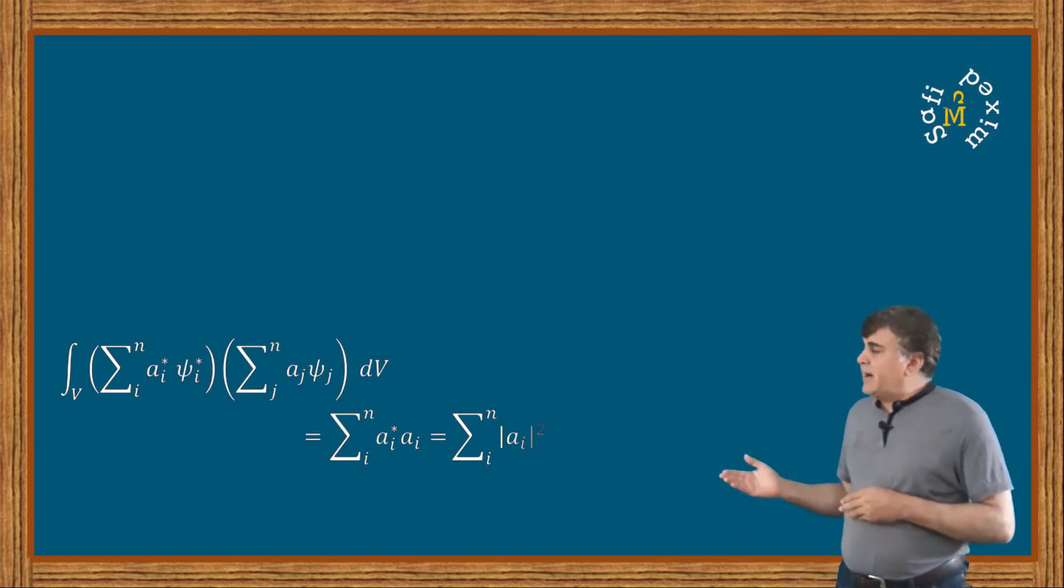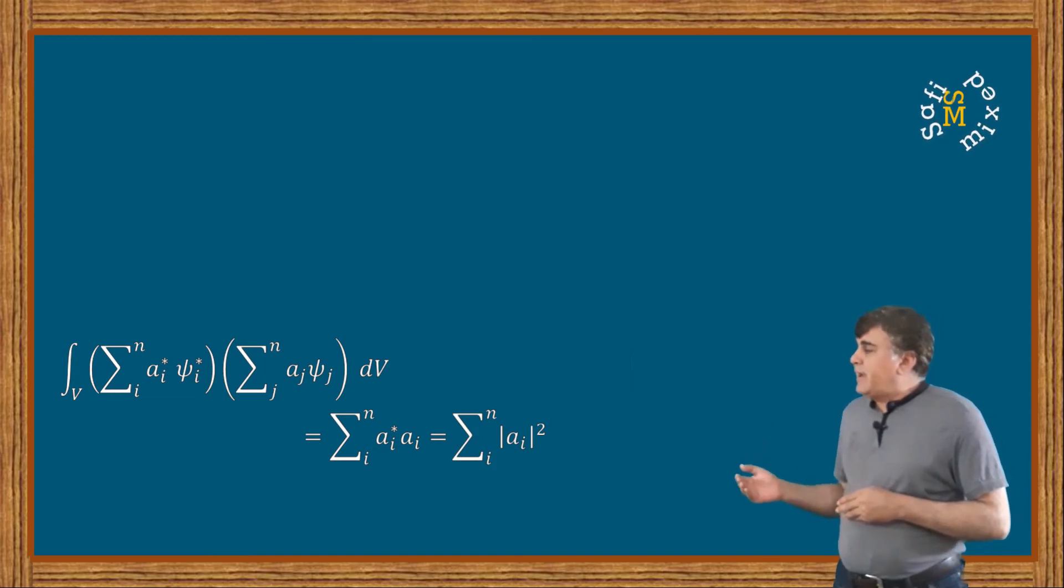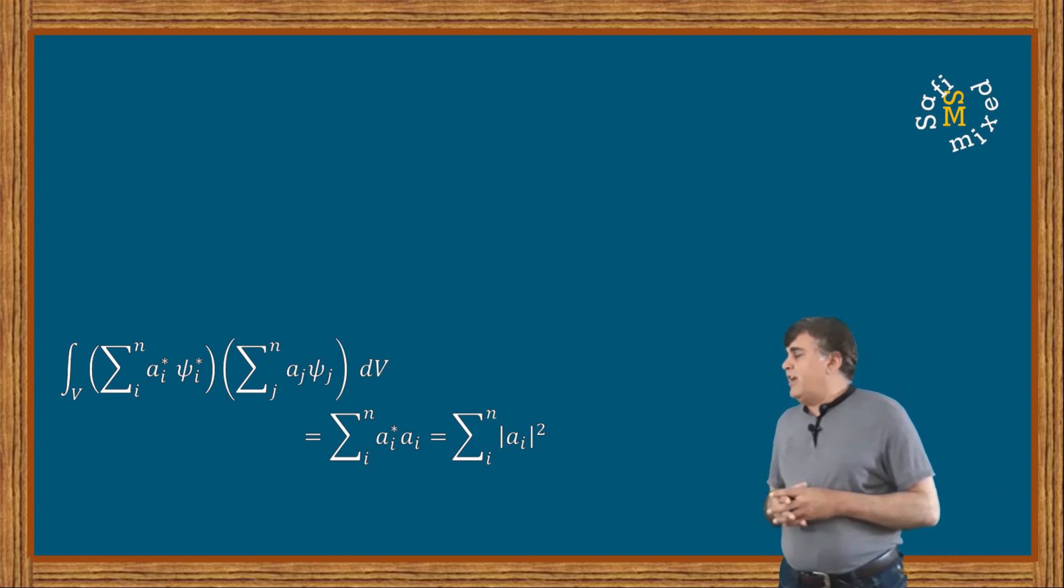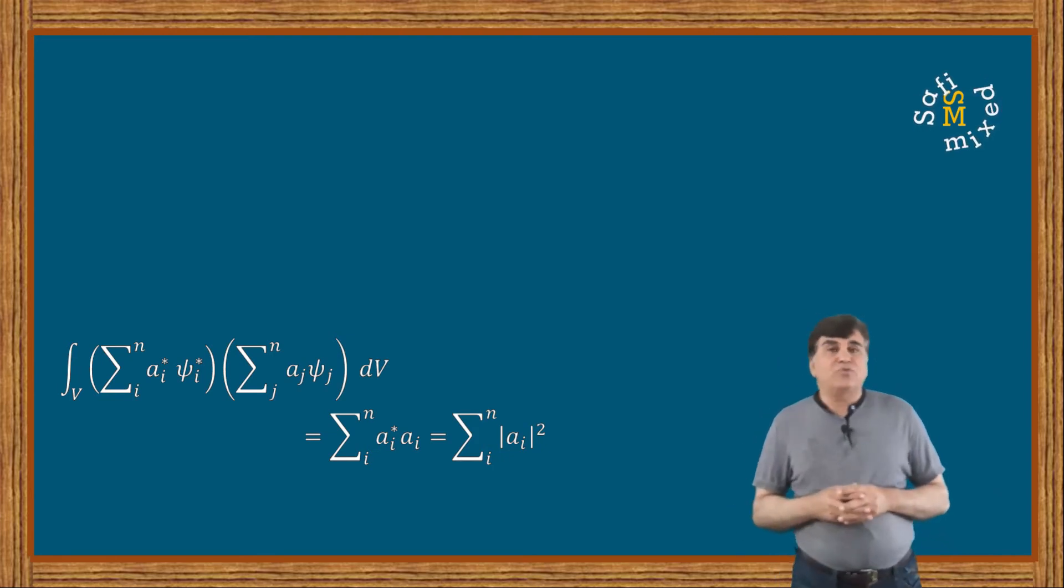And that definitely can be written as the modulus of aᵢ squared summed over i.